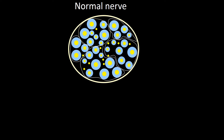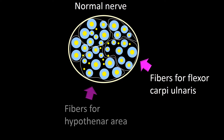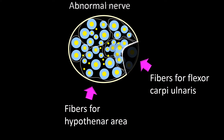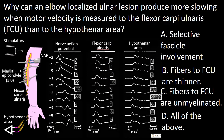In a normal nerve, myelinated fibers of different sizes and unmyelinated axons are distributed in fascicles. The fibers destined to the flexor carpi ulnaris are in one fascicle, and the fibers for the hypothenar muscle are in a different fascicle. The fibers for the flexor carpi ulnaris can be compromised while those for the hypothenar region are spared. So the answer to this question is A.